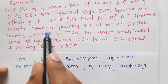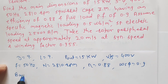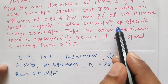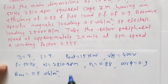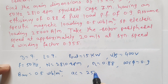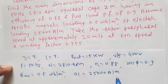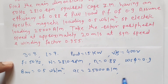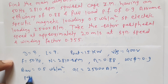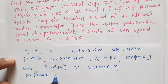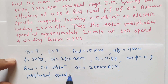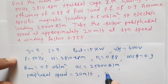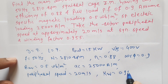Assume specific magnetic loading B_AV equal to 0.5 Weber per meter square, and specific electric loading AC equal to 25000 ampere per meter. Take the rotor peripheral speed at approximately 20 meter per second, and winding factor Kw equal to 0.955.